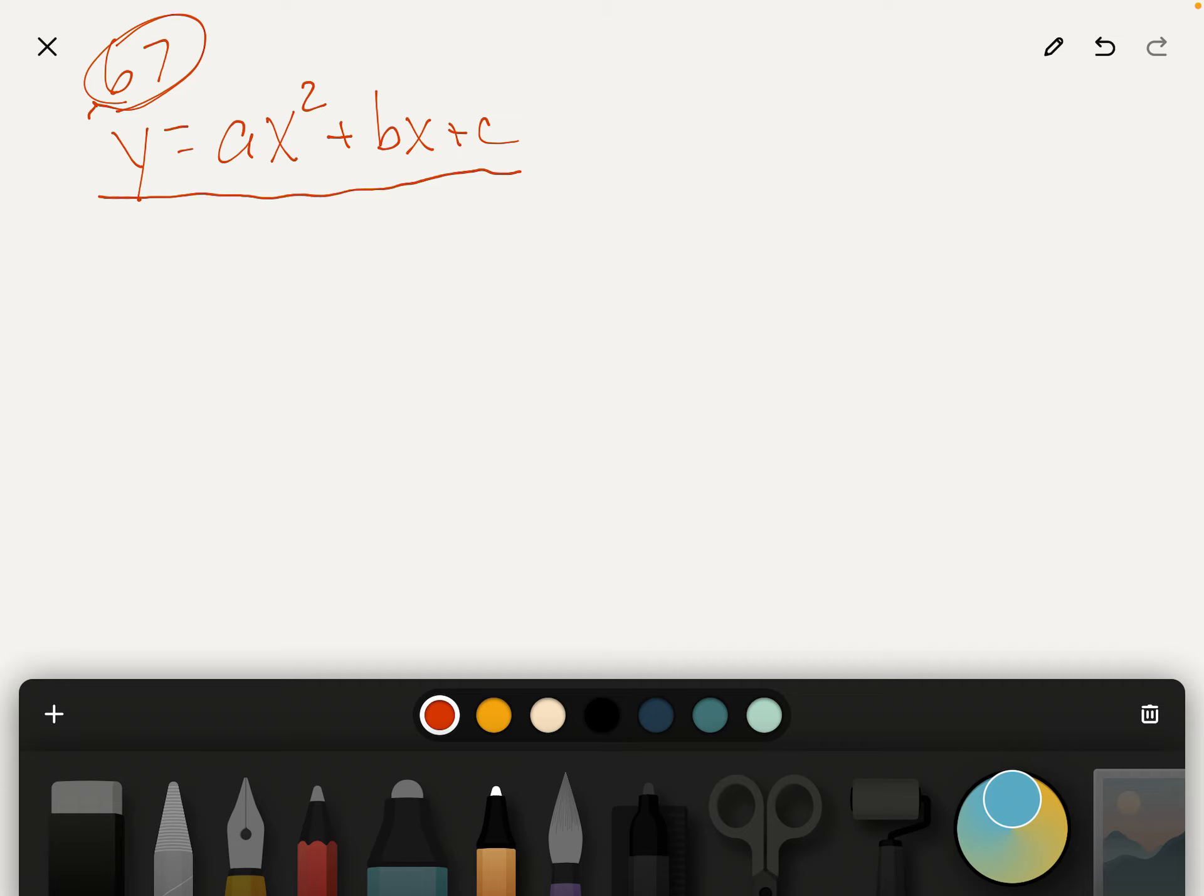So we have three unknowns. We're going to need three equations to find these three unknowns. So let's hope they gave us enough information to get three equations.